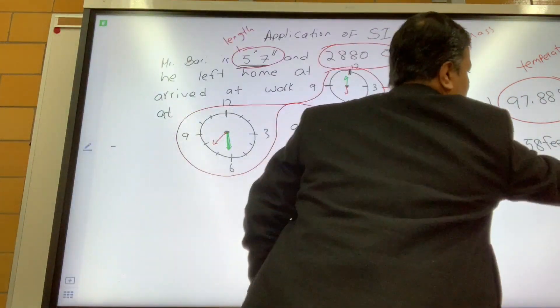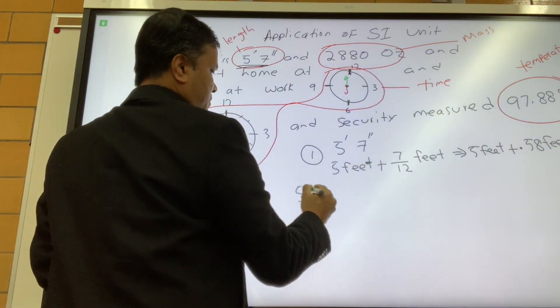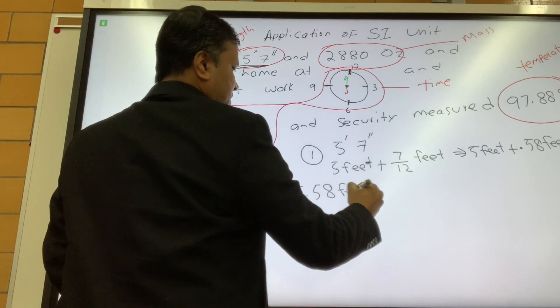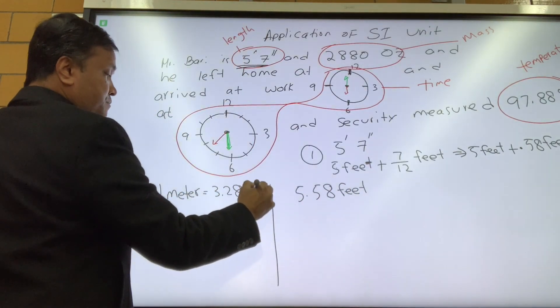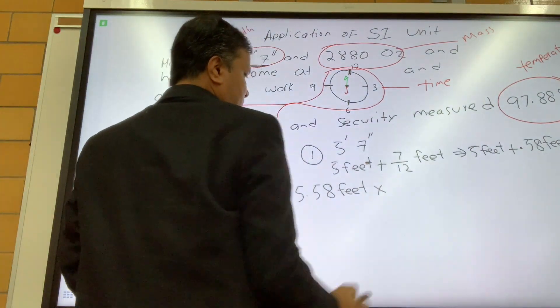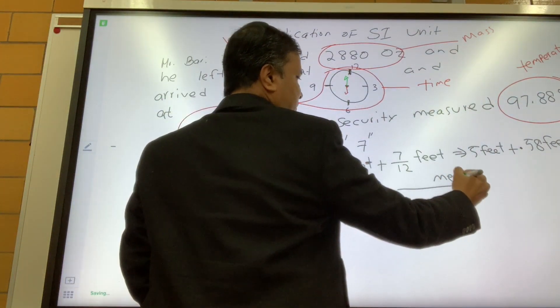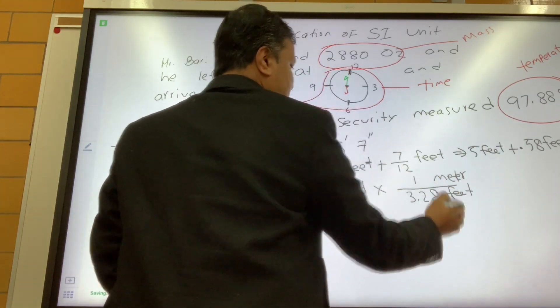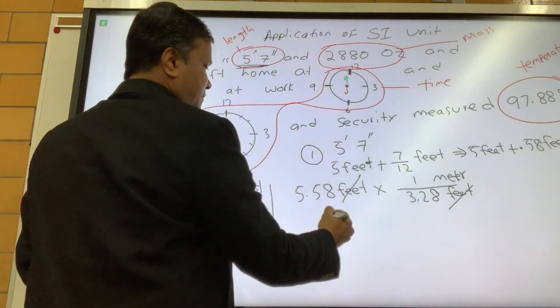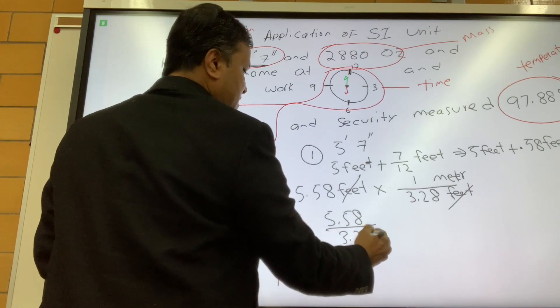Now 5.58 feet as good as it is, but it is not SI unit, so let's convert it to SI unit. 5.58 feet. So what do you know? One meter is 3.28 feet, so times meter over feet. So the ratio is 1 meter to 3.28 feet.